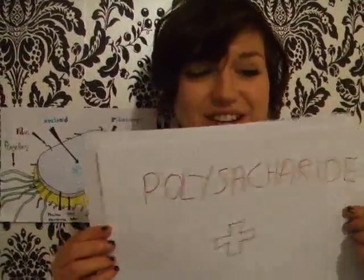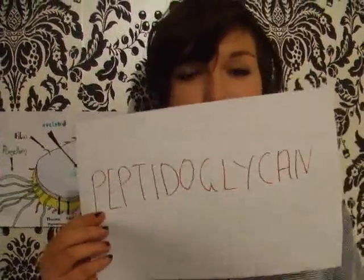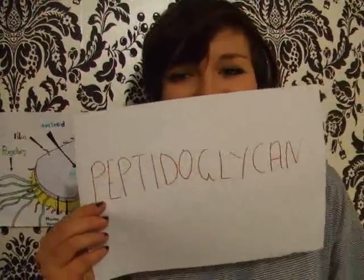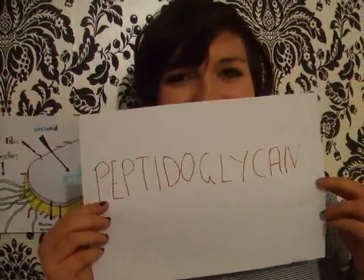It protects the bacterial cell. This capsule is often associated with pathogenic bacteria because it serves as a barrier against phagocytosis by white blood cells. The cell wall is in the next layer and it is made up of polysaccharides plus protein — that equals peptidoglycan!